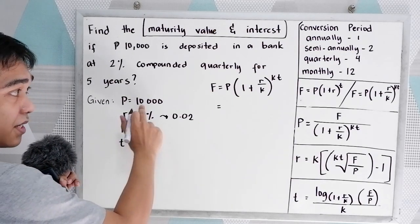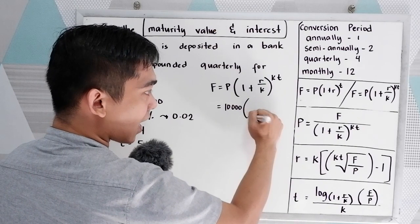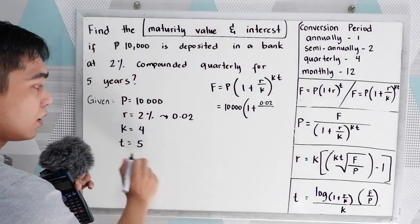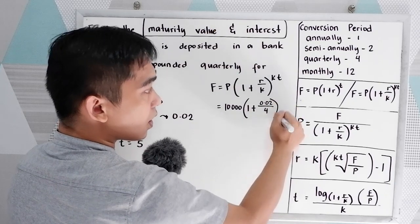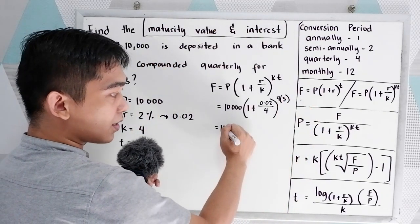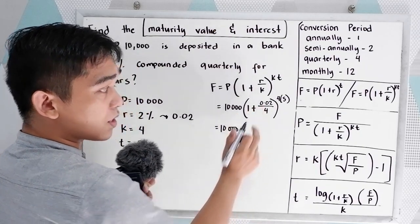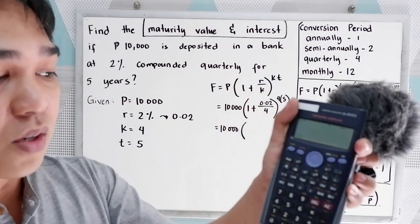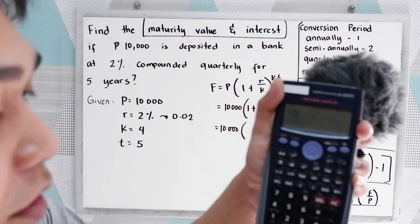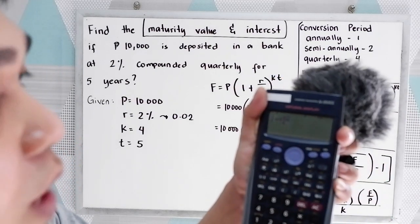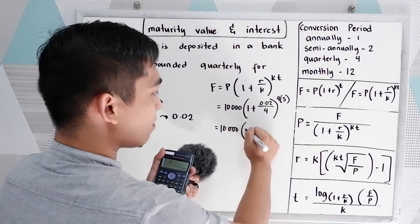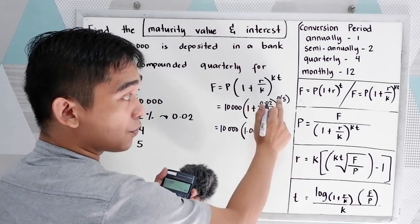Now let us substitute. P is 10,000, times 1 plus our R, our rate is 0.02, all over K is 4, raised to KT, 4 times 5. Now we have 10,000, times 1 plus 0.02, so to use your calculator, so 1 plus, then press this function, we have 0.02 all over 4.